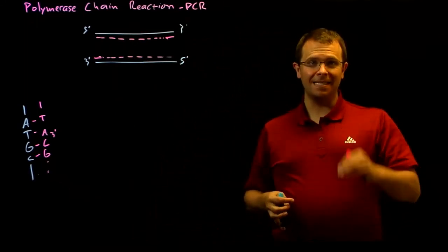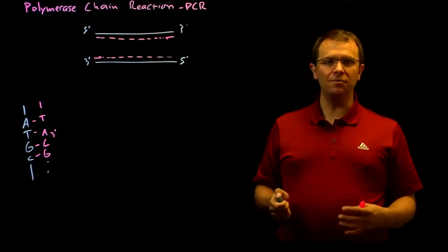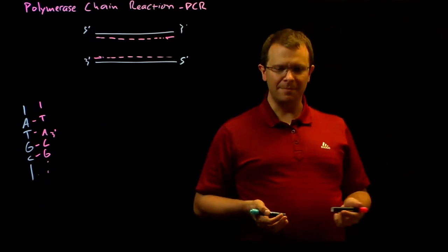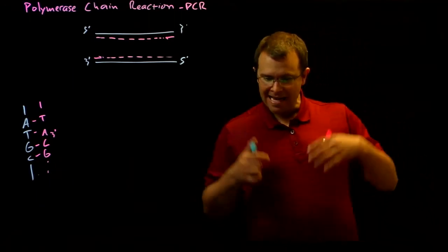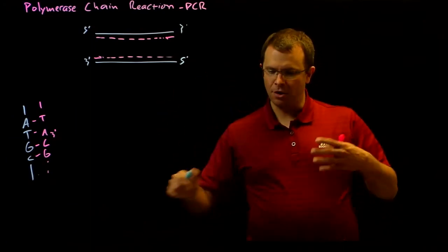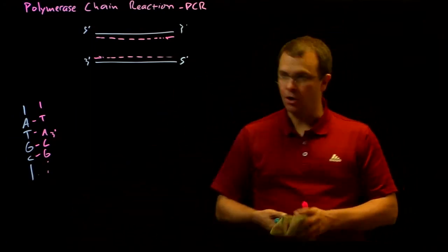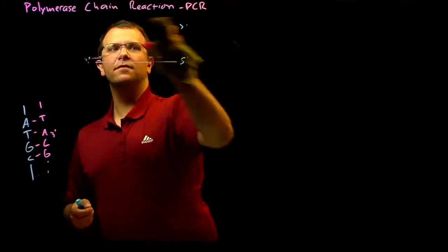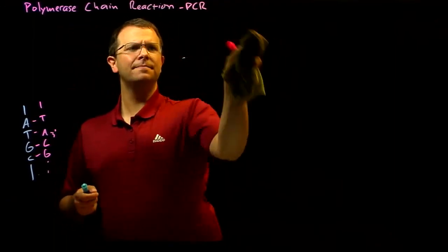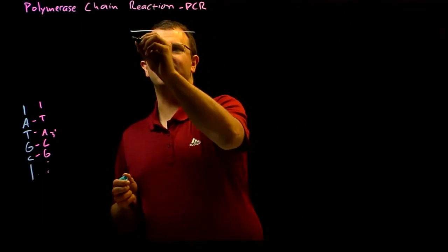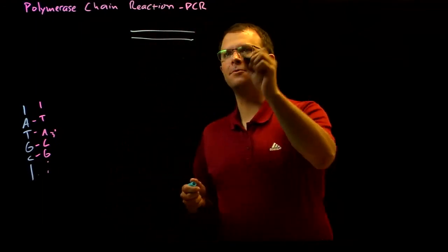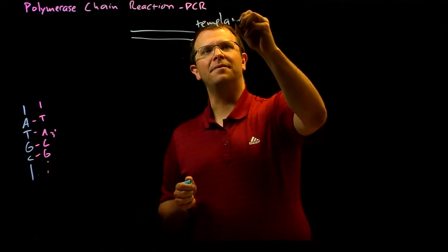The final insight here is if I use a particular kind of polymerase and change the temperature, I can make this process happen over and over and over. So, for example, let's say that I start with a double-stranded piece of DNA, and we'll call this double-stranded piece of DNA the template.